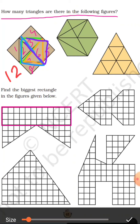Now next figure — you have to count small triangles. Count 1, 2, 3, 4, 5, 6, 7, 8. So small triangles aap ke paas kitnhi aagi? 8. Now count the biggest triangle. Combine 1 and 2 to get a triangle — so this is 9.